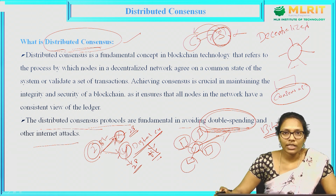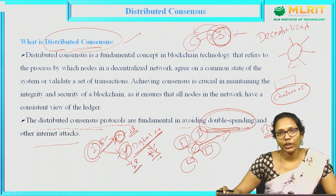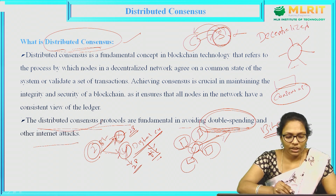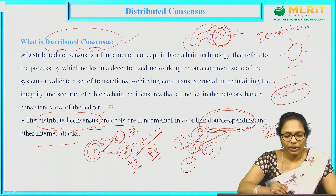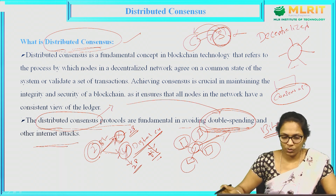To overcome this problem, we need to perform distributed consensus. Distributed consensus means first we need to check whether the transaction is a valid transaction or not. If it is valid, then only we can add the transaction to the blockchain. If we do this distributed consensus properly, then we can overcome double spending and other internet attacks.